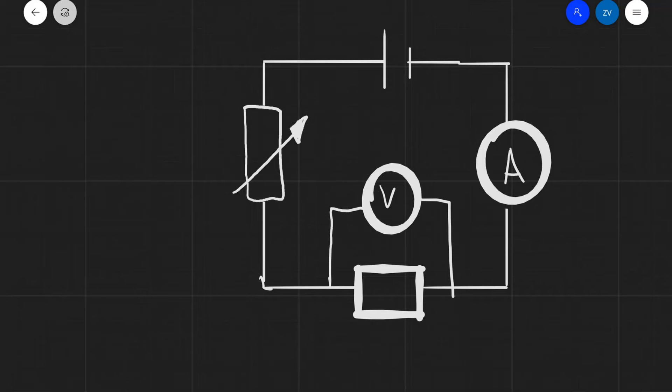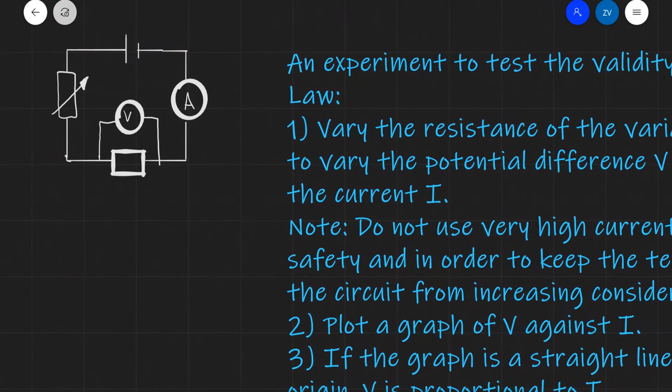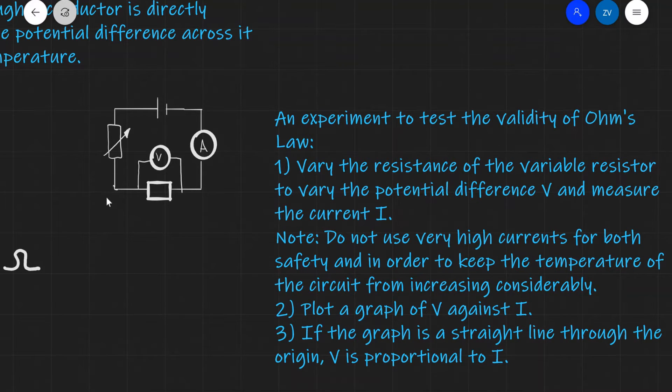We can test out the validity of Ohm's law with a simple experiment in which we have a cell connected to a variable resistor, then we have a resistor with a voltmeter across it and an ammeter in this circuit. The idea here is that by varying the resistance of the variable resistor, we are going to be varying the potential difference across this resistor.